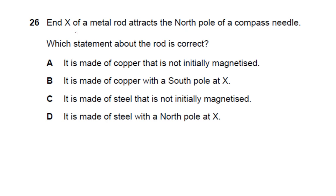Question 26: end X of a metal rod attracts the north pole of a compass. Copper is non-magnetic so eliminate those options. Steel can be magnetized. If the rod is made of steel and is not initially magnetized, the north pole induces a south pole at X by attraction. Answer: C.